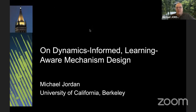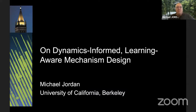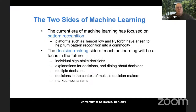The title gives a little bit of the flavor of what I'm going to be talking about. 'Learning aware' means we're going to use statistical data and statistical inference principles to design mechanisms, bringing incentives and learning together. 'Dynamics and forms' refers to algorithms with dynamical properties — I'm particularly interested in large-scale problems where equilibria exist but systems are never actually in equilibrium in the real world.